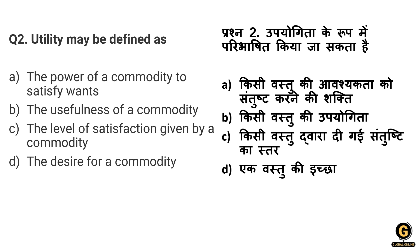Question number 2: Utility may be defined as — which option correctly shows the definition of utility? The options are: the power of a commodity to satisfy wants; the usefulness of a commodity; the level of satisfaction given by the commodity; or the desire for the commodity. Option D (desire) is not correct. The level of satisfaction is close but utility does not mean only satisfaction. The most precise definition is the power of a commodity to satisfy wants, so the correct option is A.